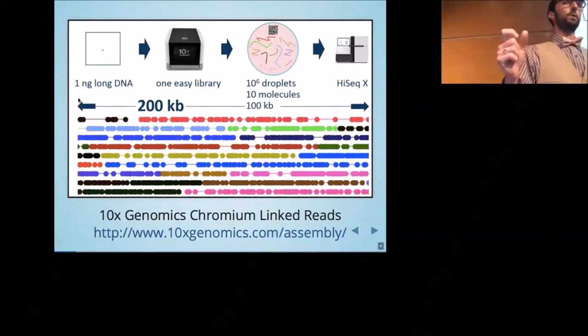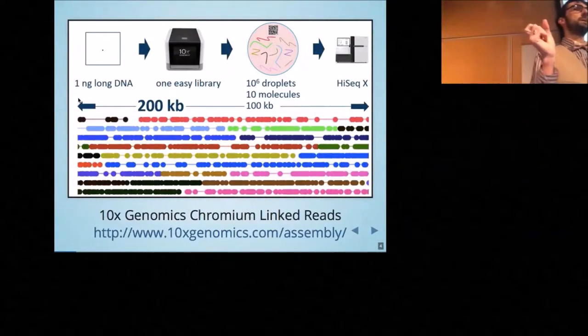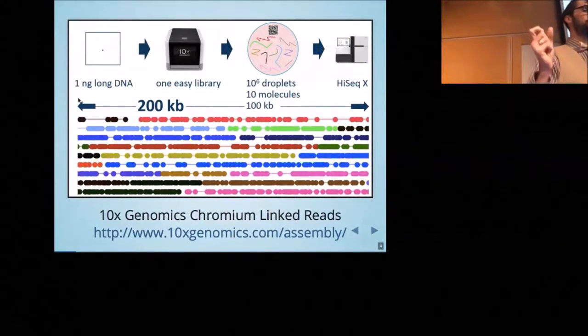It's a library prep protocol upstream of Illumina sequencing such that all the reads from a single large molecule of DNA have the same barcode, so when you sequence afterwards you can tell which reads came from the same large molecule. You can think of this like paired-end sequencing—you get two reads, one from each end of a one kilobase molecule.